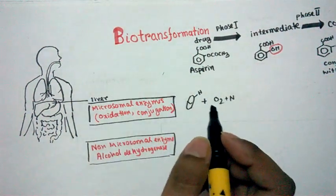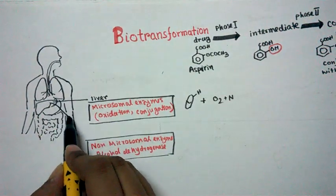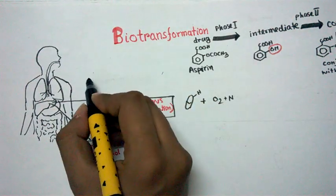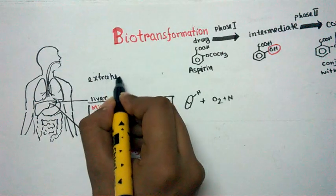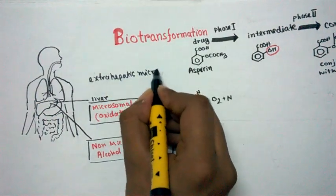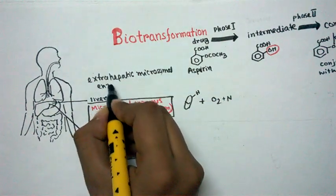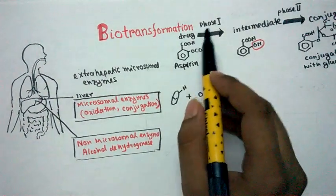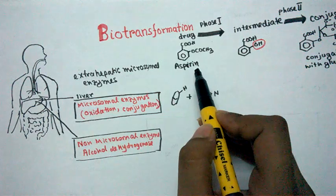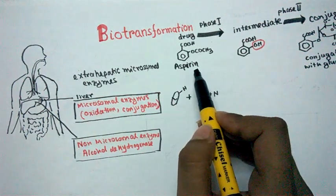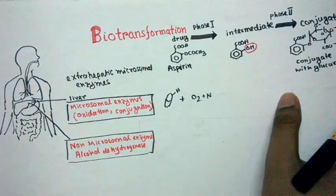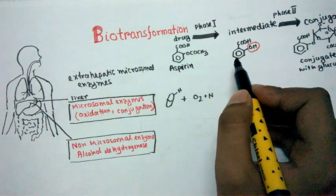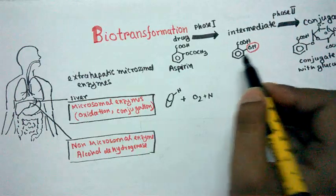The main goal of biotransformation is to make the drug more soluble so that it can be easily excreted in the urine. Apart from the liver, we also have extra-hepatic microsomal enzymes that detoxify drugs. As an example, consider aspirin — a very popular NSAID (non-steroidal anti-inflammatory drug) — which is biotransformed inside the liver into a more soluble form so that it can be easily excreted in the urine.